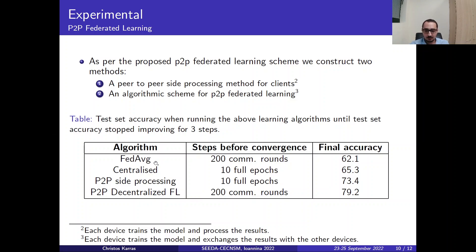We have the FedAvg widely known algorithm, which is utilized for 200 communication rounds, and it peaked at 62% accuracy.